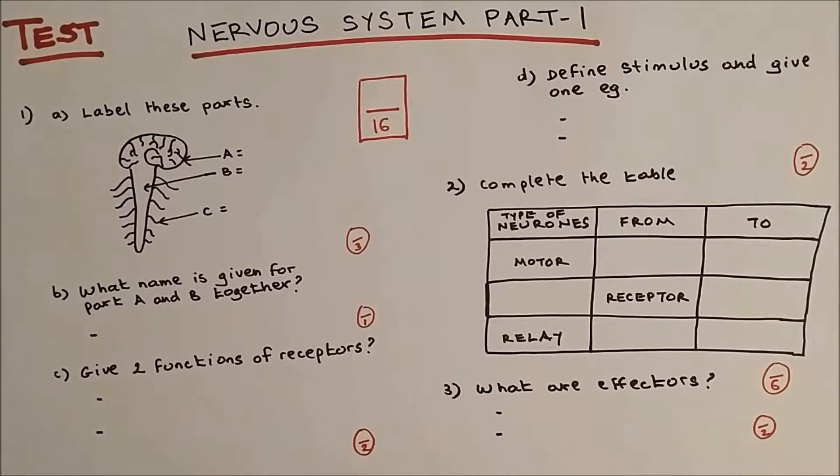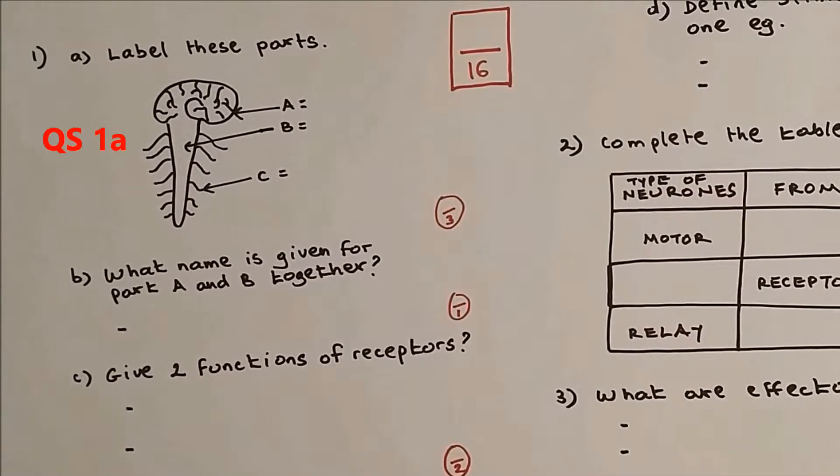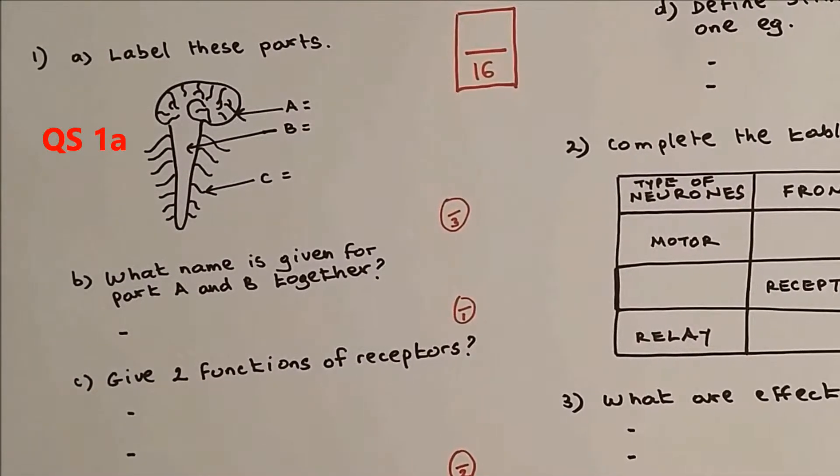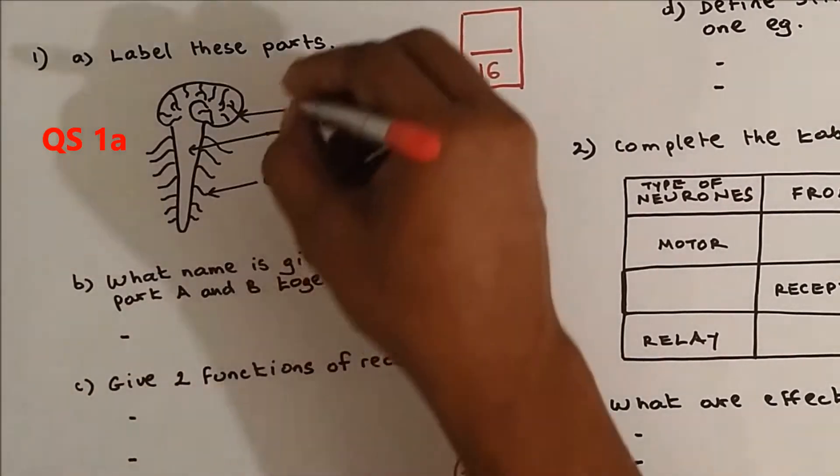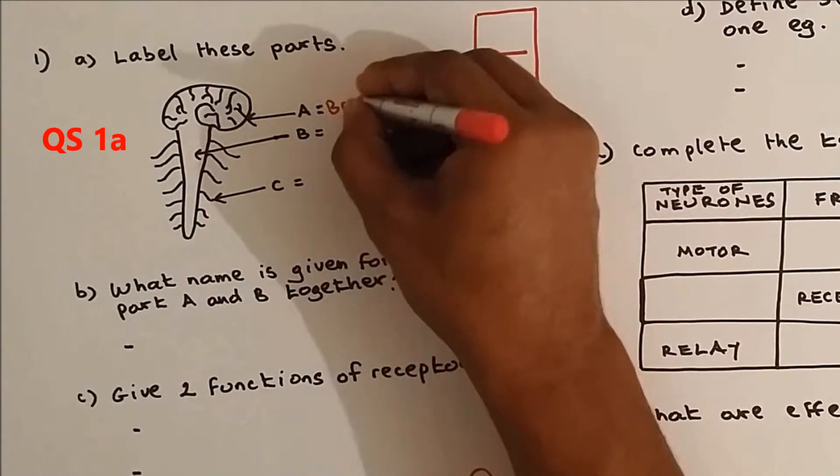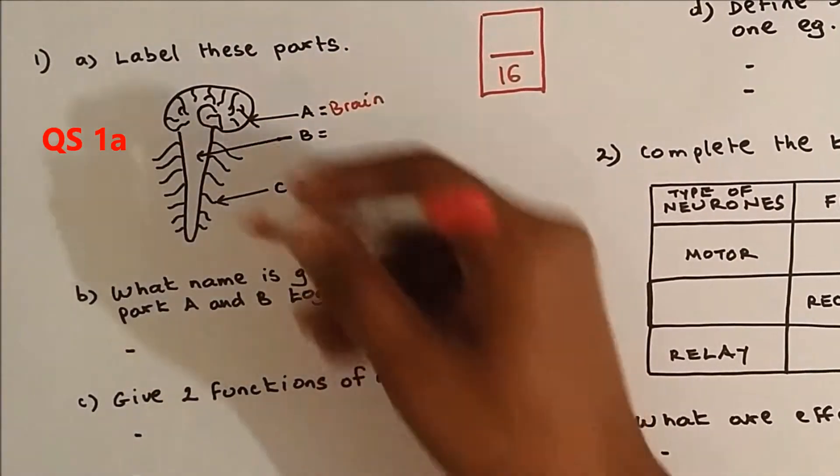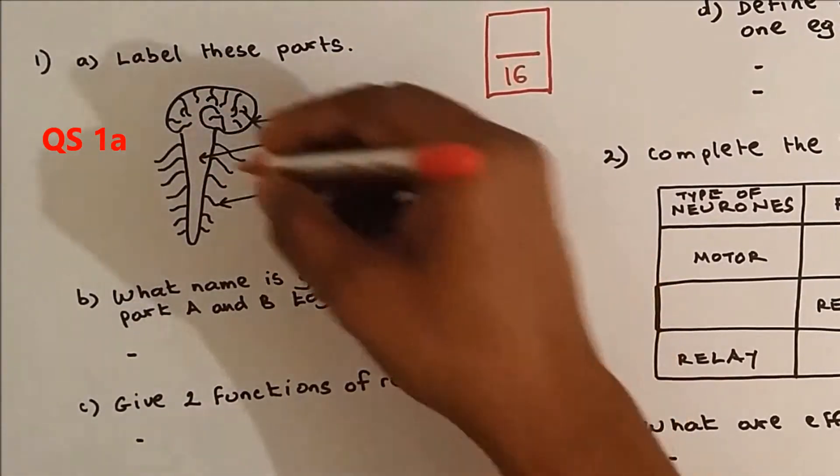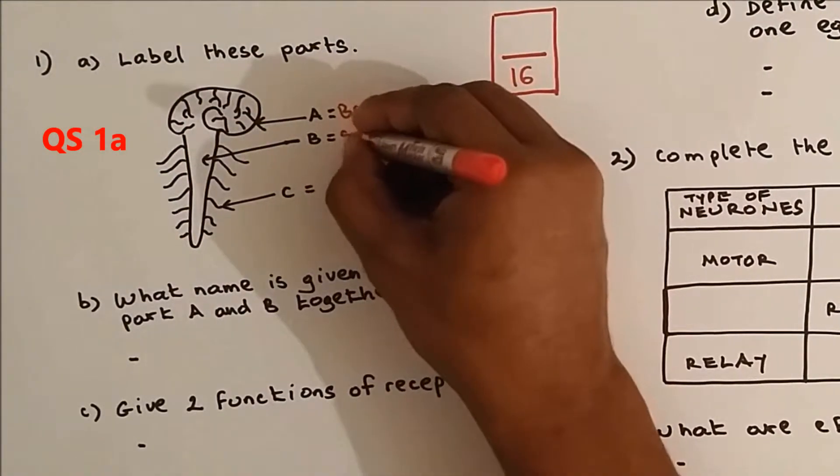If you're ready, let's do this. Question number one: label these parts. I hope you can understand my diagram. That is the brain and what is connected to the brain is the spinal cord.